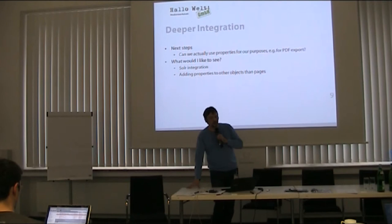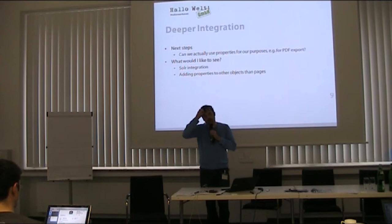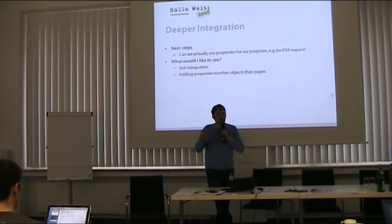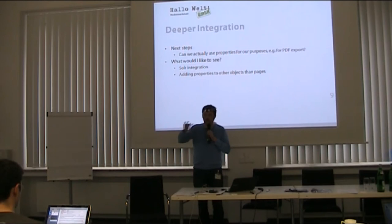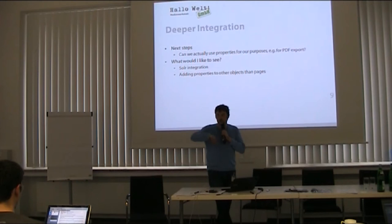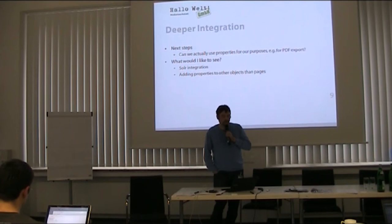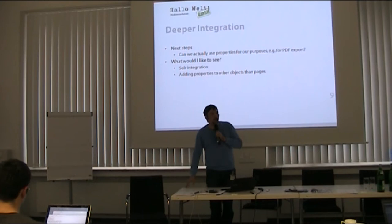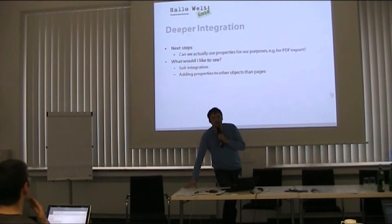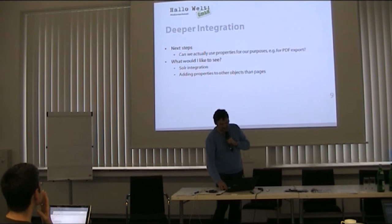Looking at next steps: I see that we might use Semantic MediaWiki for article selection quite a lot. When I have this handbook solution and need a specific selection of articles for the handbook, semantic properties can be really useful for choosing those articles — for example when I have different versions of some article. I'd also like to see Solr integration. And for some extensions we wrote, it might be interesting to be able to add semantic properties not only to an article but also to another entity like a comment or a specific rating. I haven't found a way — I guess you know how to do it, but maybe you can make it easier.